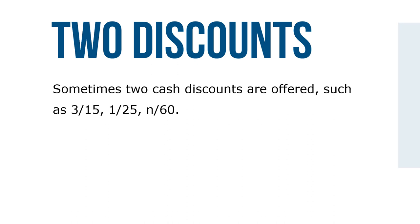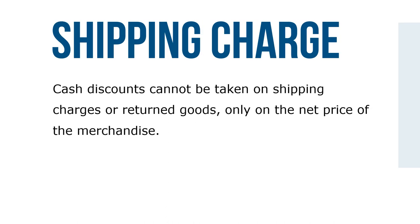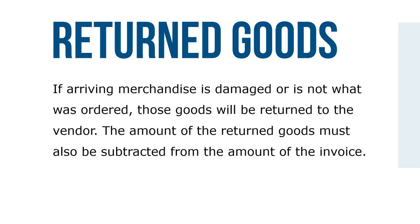Sometimes two cash discounts are offered, such as 3/15, 1/25, net 60 — meaning a 3% cash discount if the invoice is paid within 15 days, a 1% discount if paid within 25 days, and the net amount due in 60 days. Cash discounts cannot be taken on shipping charges or returned goods, only the net price of the merchandise. If shipping charges are included in the invoice amount, they must be subtracted before the cash discount is taken, then added back after the discount to get the invoice total. If arriving merchandise is damaged or not what was ordered, those goods will be returned to the vendor and the amount subtracted from the invoice.